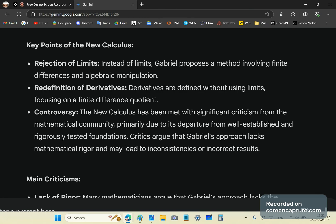Well, yes, it is, because those are all garbage concepts that I have proved over and over again to be flawed and to have serious logical problems. So, it says, let's look at the key points that it says in the new calculus. It says rejection of limits. Yes, it does reject limits. And it says, proposes a method involving finite differences in algebraic manipulation. Then the redefinition of derivatives. That's true because they are redefined, but it's not just without using limits and focusing on a finite difference quotient. It uses the mean value theorem. And the mean value theorem is the reason your calculus works. Without the mean value theorem, you cannot use calculus. And you cannot use the mean value theorem unless you have a smooth function. Does that make sense? That means you can toss everything out of the window unless you have a smooth function.